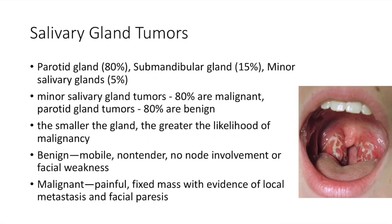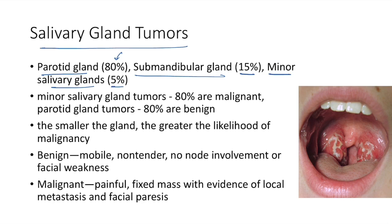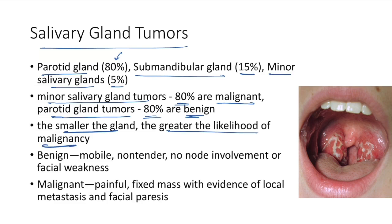Salivary gland tumors: the most common site is the parotid gland (80% of cases). Fifteen percent are submandibular gland tumors and 5% are minor salivary gland tumors. Though minor salivary gland tumors are less common, 80% of them are malignant. Parotid gland tumors are more common but 80% are benign. Important rule: the smaller the gland, the greater the likelihood of malignancy.